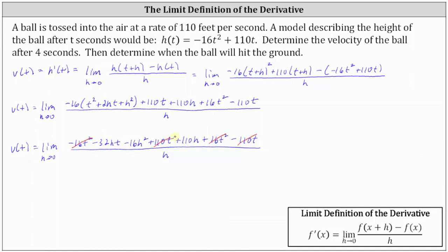Notice the remaining three terms in the numerator all have a common factor of h. So now we'll factor h from the numerator, which we'll then simplify with the denominator. Factoring h from the numerator, we have h times the quantity negative 32t minus 16h plus 110, all divided by h.